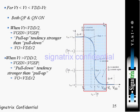When Vt is less than Vi and Vi is less than Vdd minus Vt, this is the transition region where both Qp and Qn are on. When Vi is less than Vdd by 2, the Vgs of N is less than Vgs of P, so the pull-up tendency is stronger than pull-down, and the output voltage VO is greater than Vdd by 2.